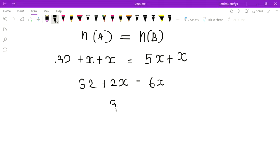Next step, I keep the 32 here and 6x. Bring down the 2x in that side, opposite side, it changed to minus. Minus 2x. So 32 is equal to 4x.